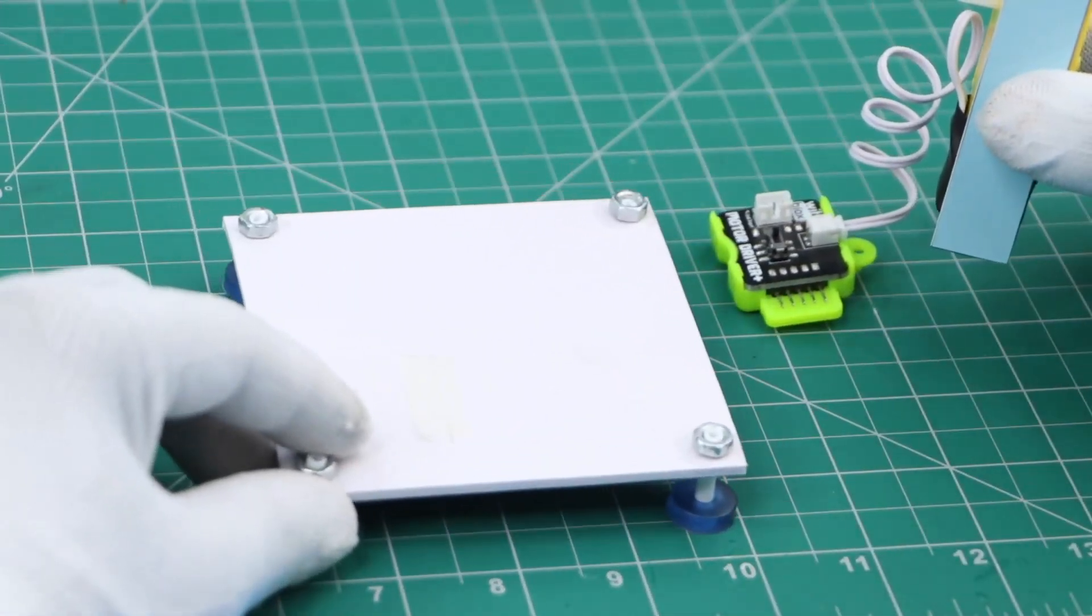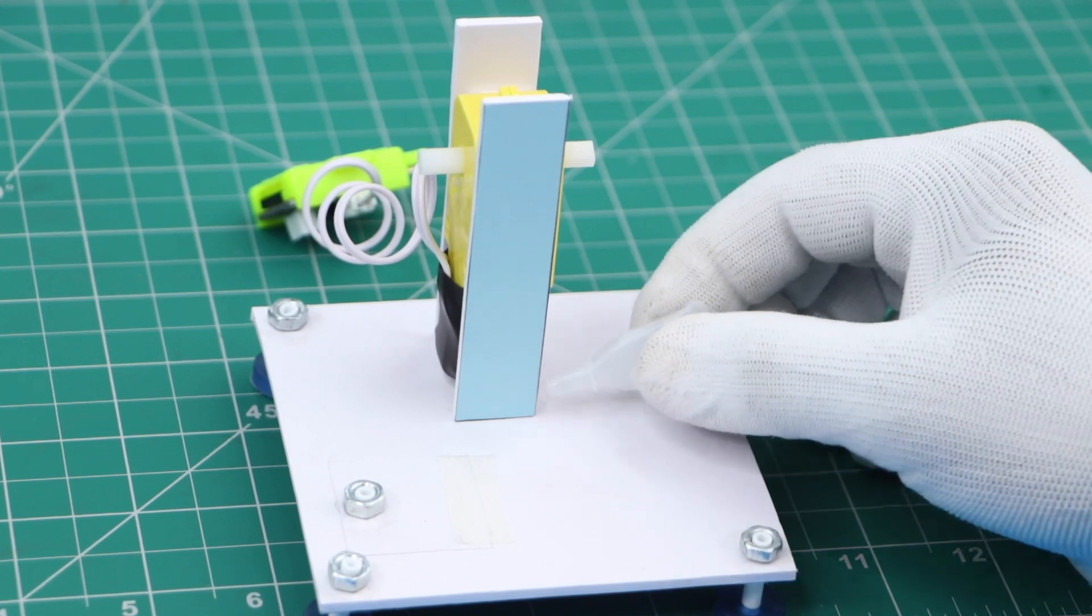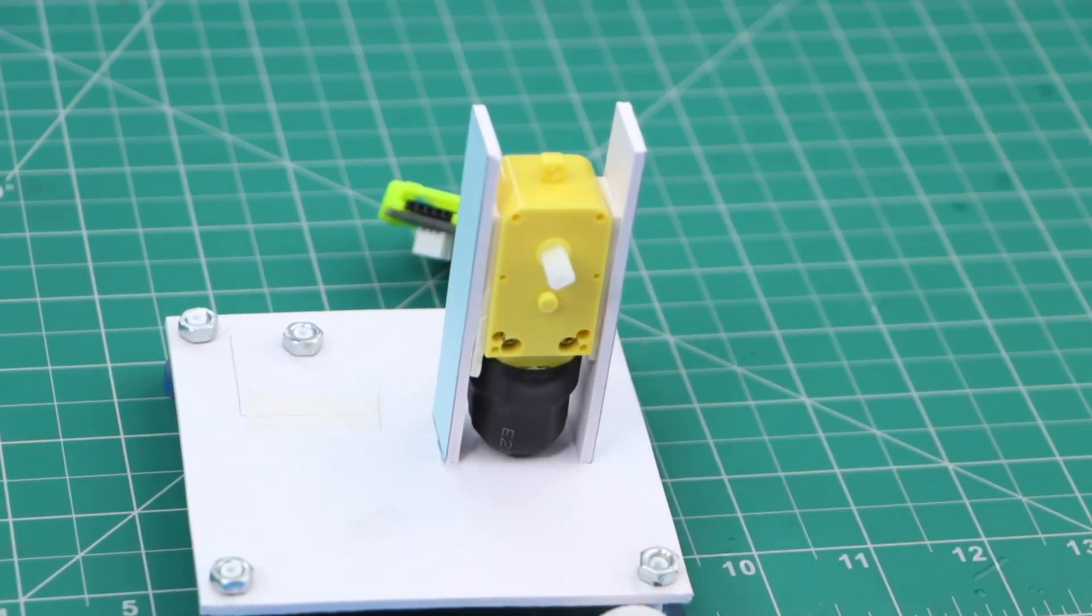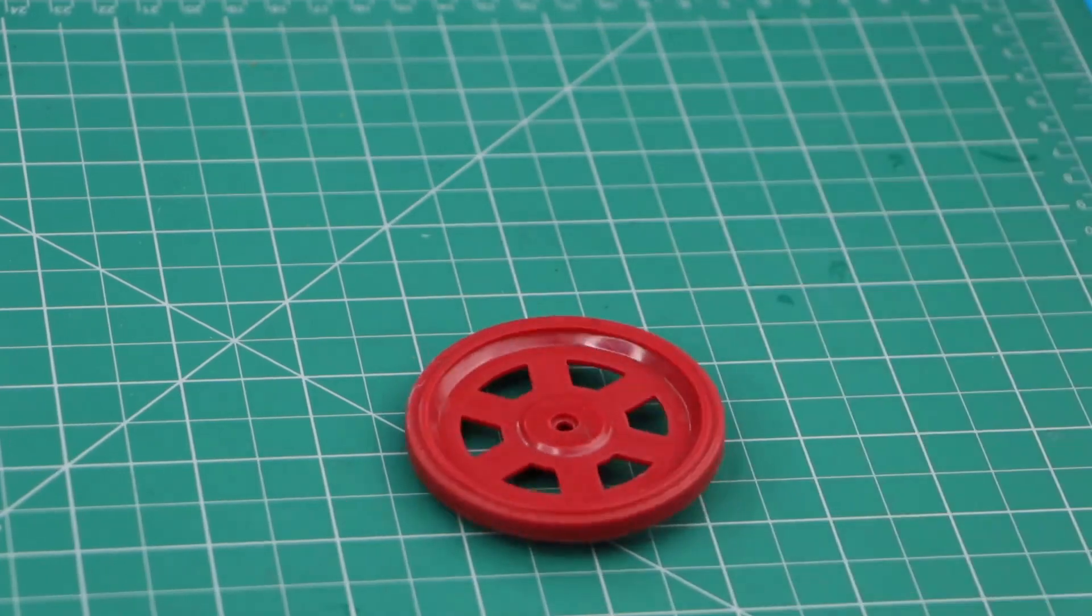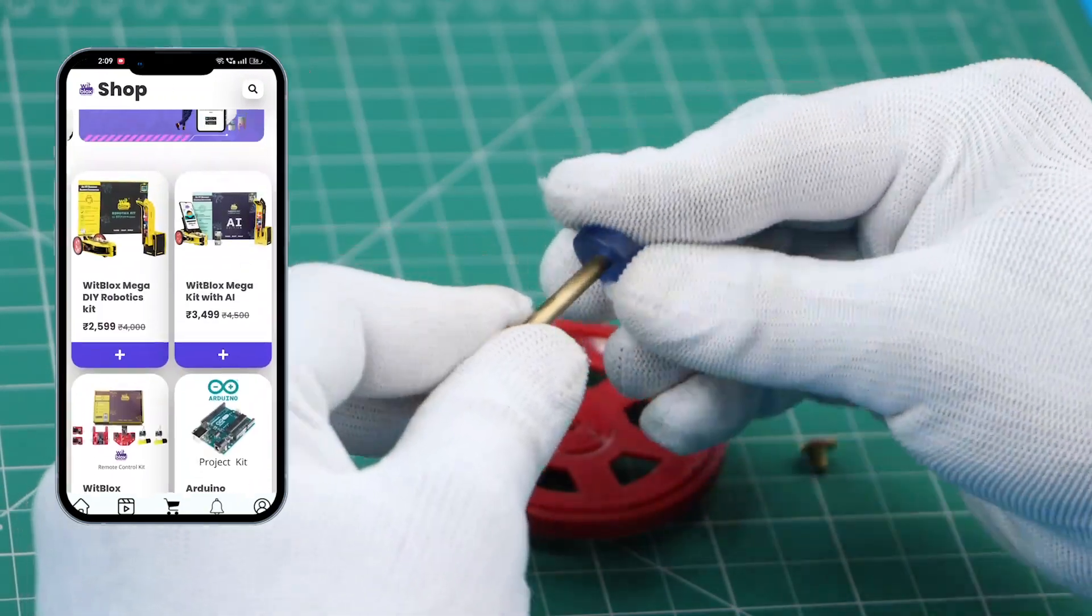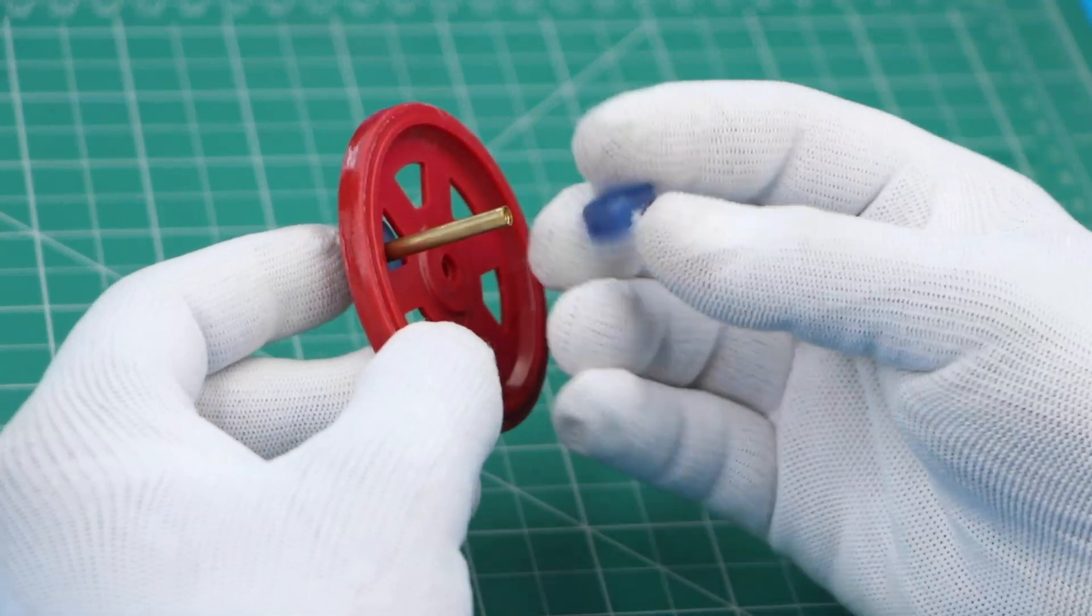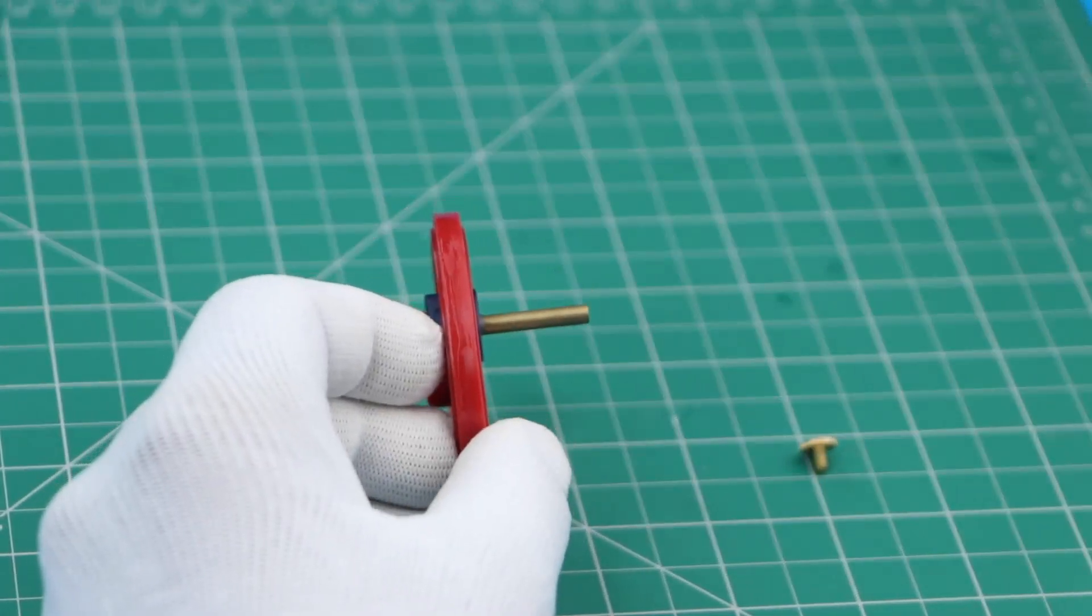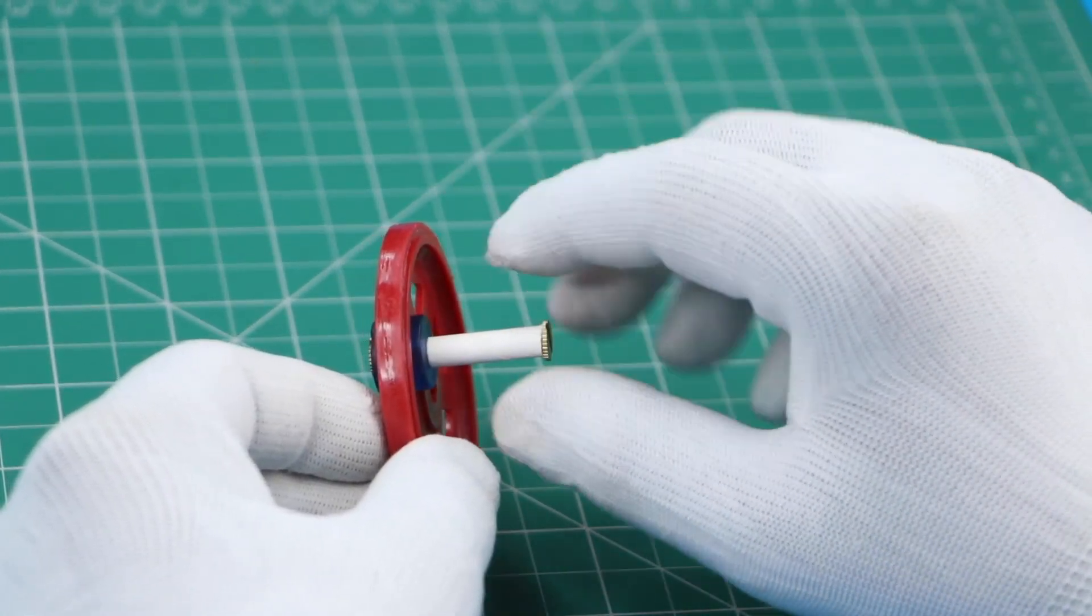After adding some support to the motor, we stick it to the base. You can order these parts from the Bitblocks app. Make sure that the straw is rotating freely.